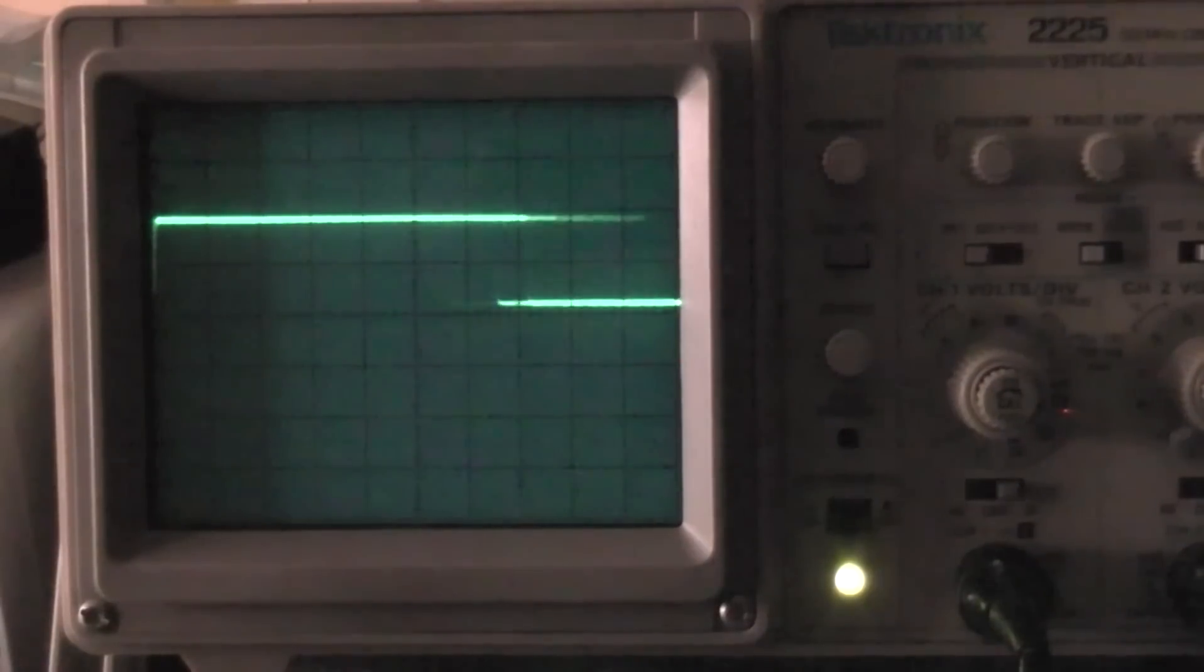When the transmitter is turned off, the receiver will either output nothing to the servos or a stream of random pulses due to the background interference, as you can see in the oscilloscope trace. This causes the servos to jitter around randomly.